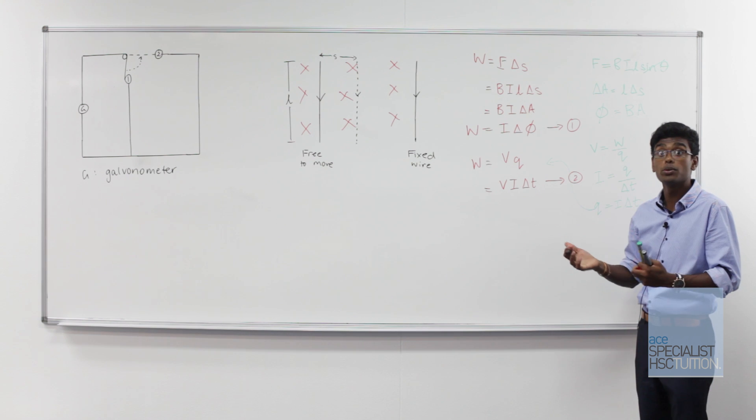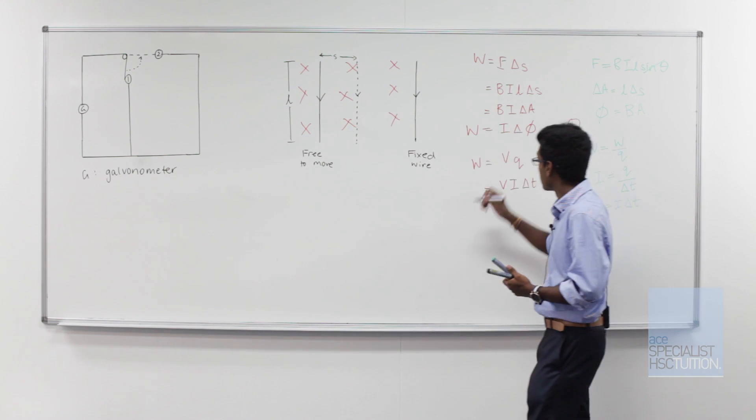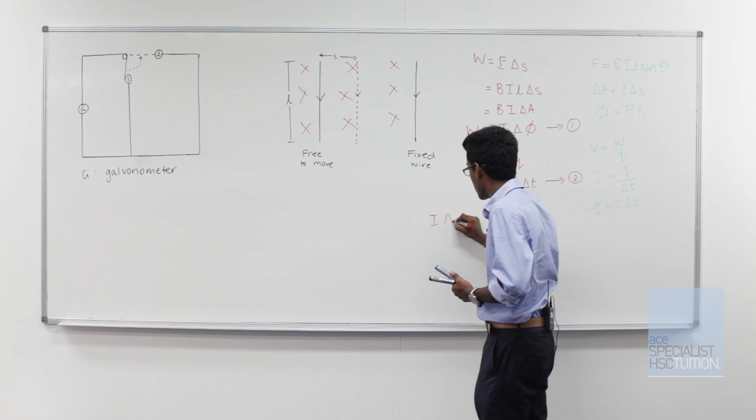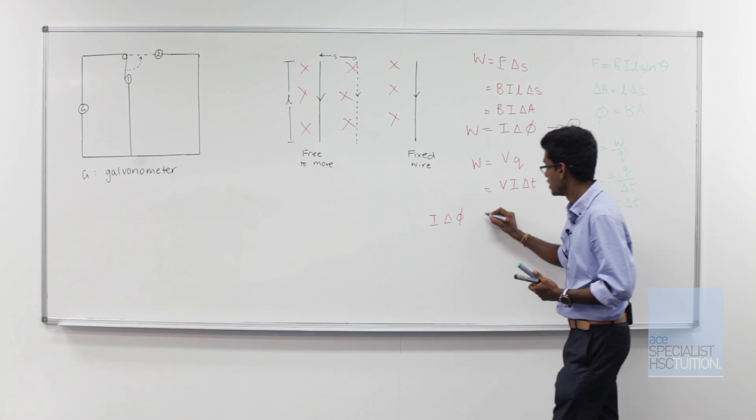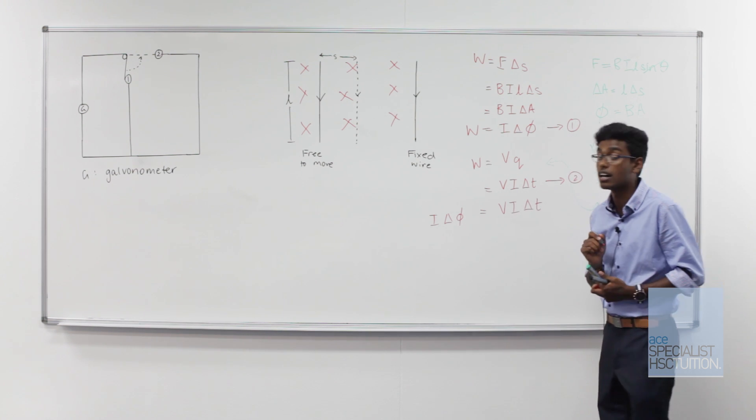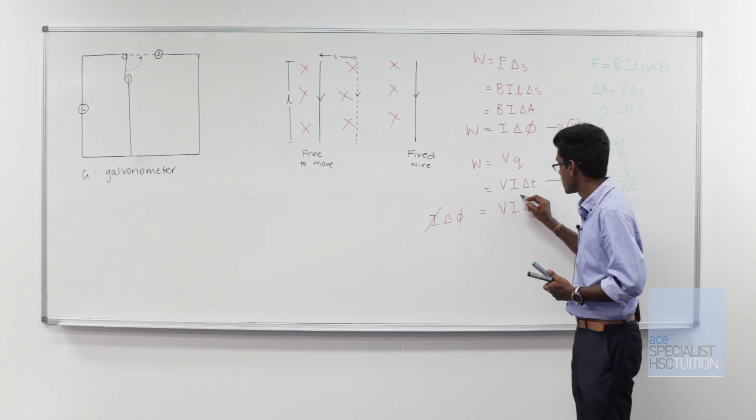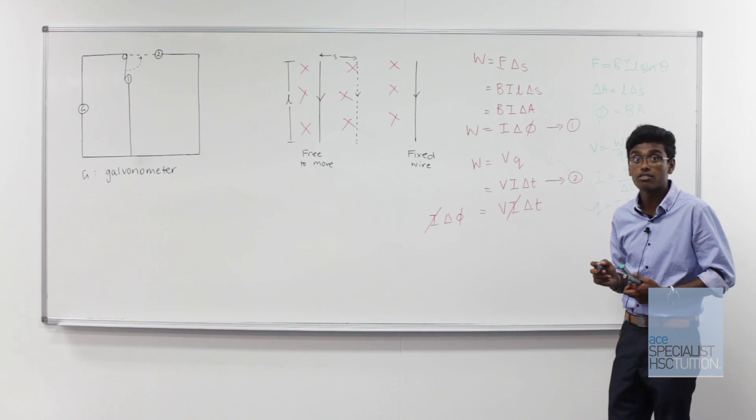We now have two expressions for work. So we can equate the two together. We've got I times change in flux on one side and V times change in time on the other. If we cancel out I on both sides and rearrange our formula,